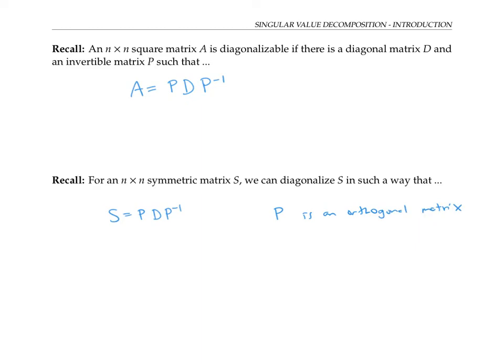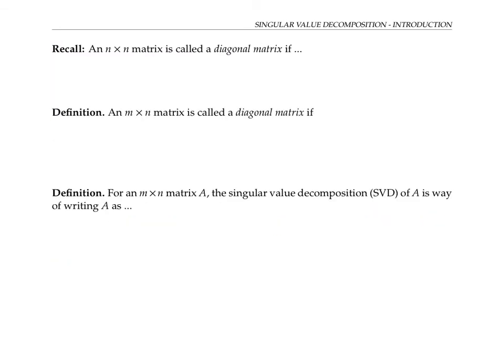The singular value decomposition generalizes these ideas to a general matrix A that need not even be a square matrix. In order to generalize this idea of diagonalization to matrices that aren't even square matrices, we first need to generalize the idea of a diagonal matrix.